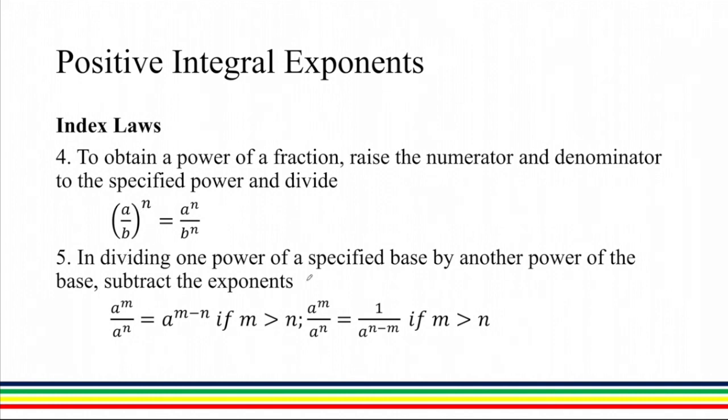In dividing one power of a specified base by another power of the base, we have to subtract the exponents. For example, a raised to m over a raised to n is equivalent to a raised to the exponent of the numerator minus the exponent of the denominator. And this is only applicable if m is greater than n.